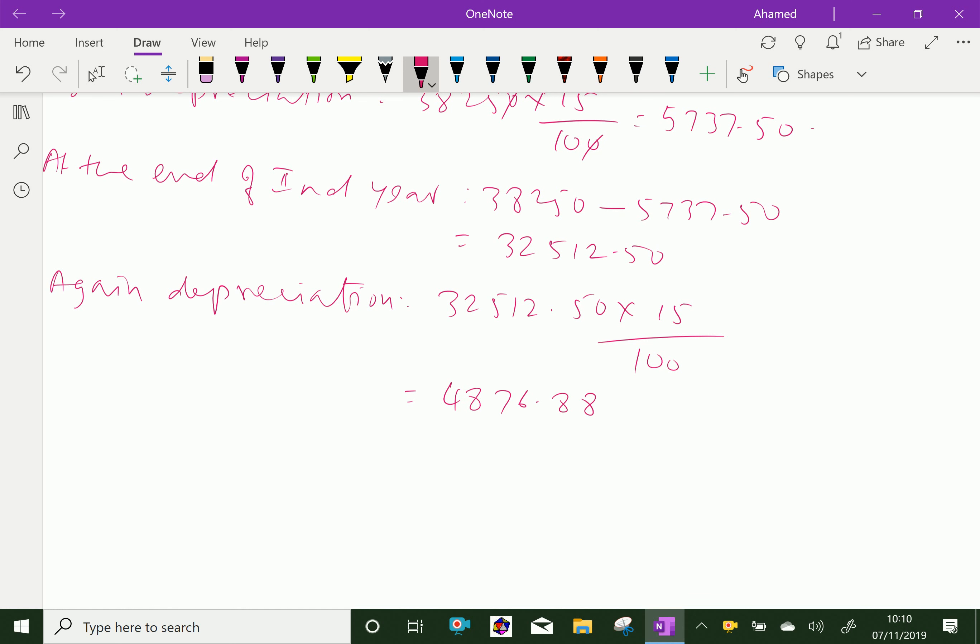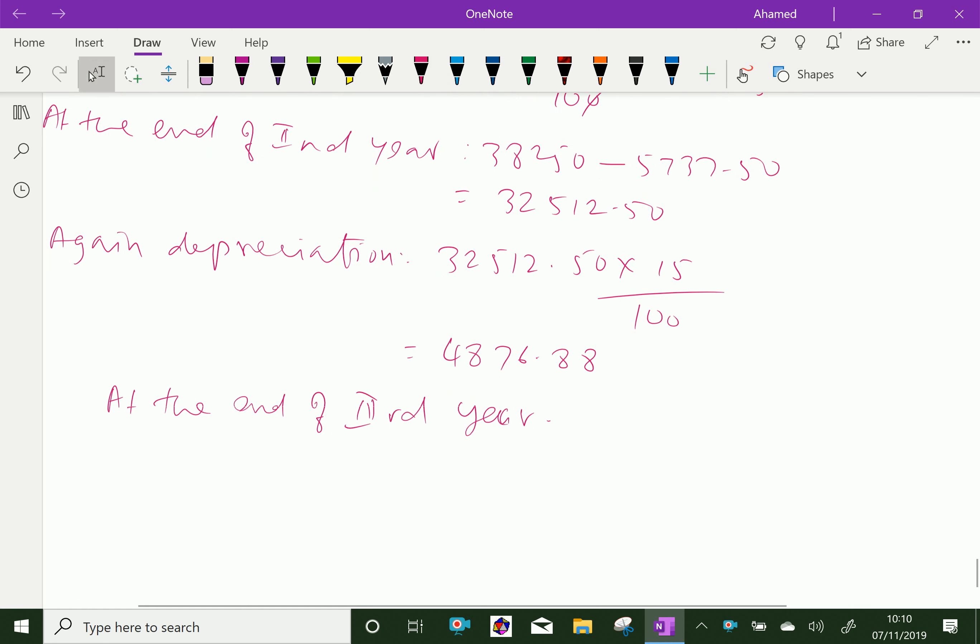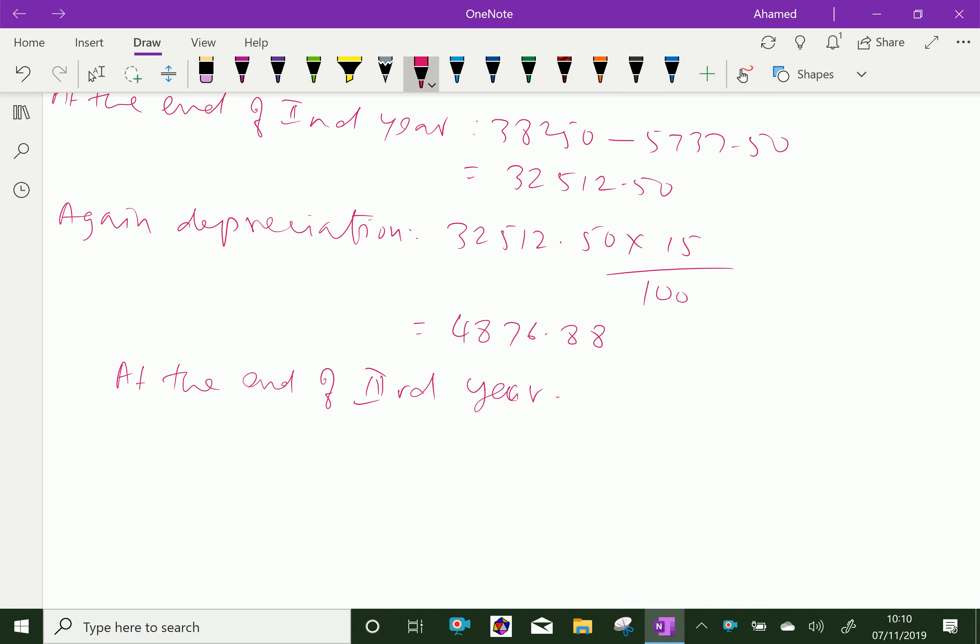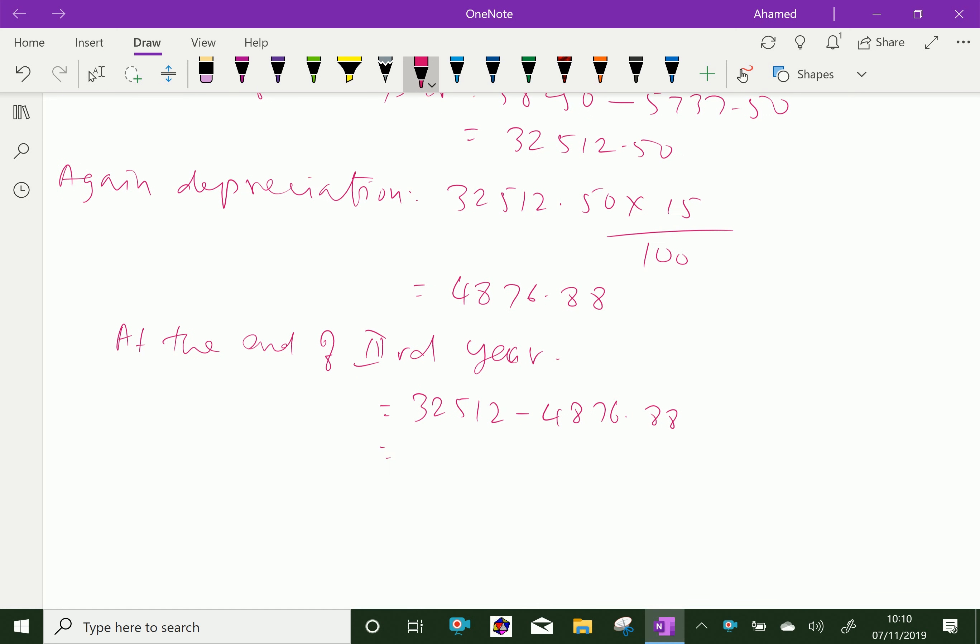Therefore, at the end of third year, the value of the motorbike is 32,512.50 minus 4,876.88. By calculation you can get this.